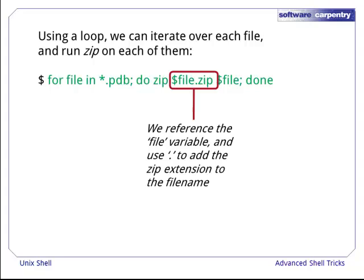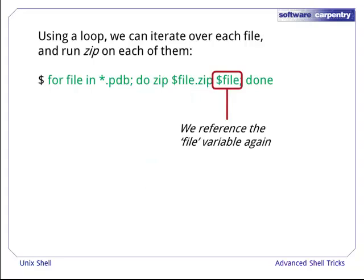This file is a variable which we can use to reference each file within the loop. For example, if $file is cubane.zip, this becomes cubane.pdb.zip. So here we are just using the file variable to specify the file we wish to put in a zip file.